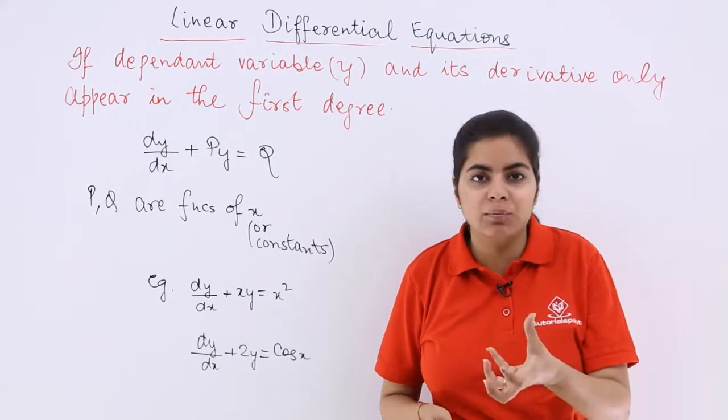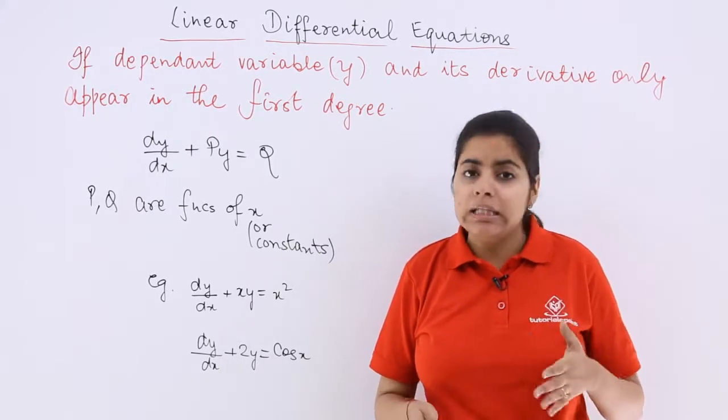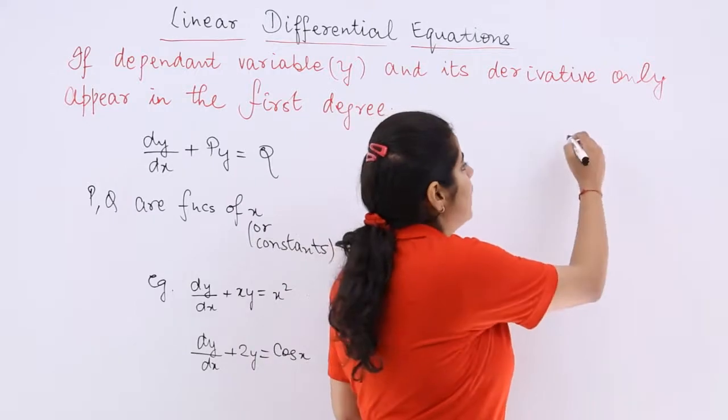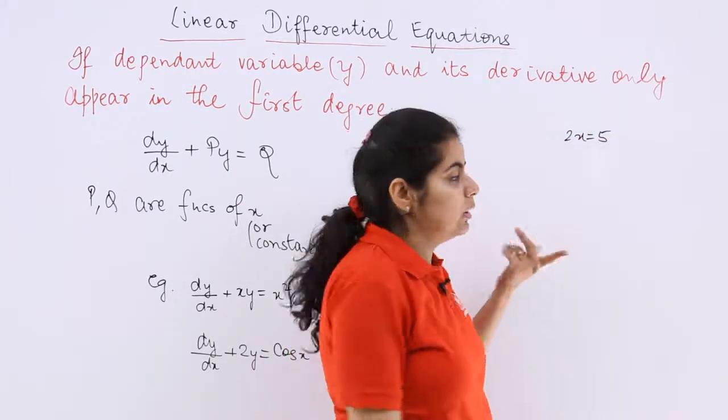Remember, a linear equation in one variable was what? Like 2x equals 5. This is a linear equation in one variable.